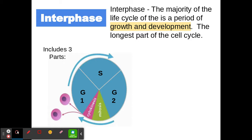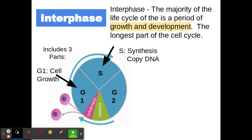Interphase is the majority of the cell's life cycle where the cell does its normal activities. It is a period of growth and development and the longest part of the cell cycle. It has three different parts: G1, S, and G2.